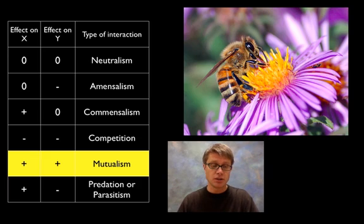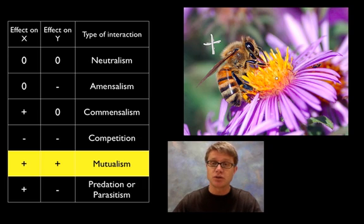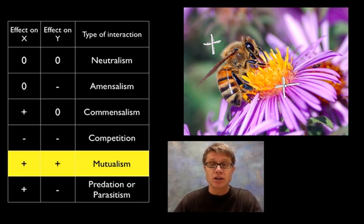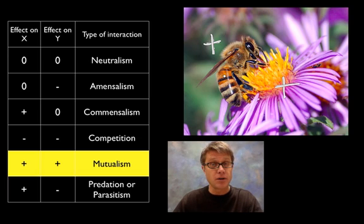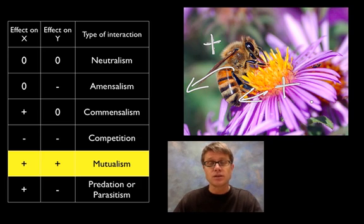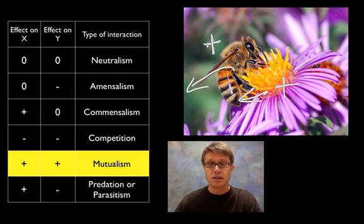Next is mutualism, which is when both organisms benefit. Pollination is an example of a mutualistic relationship between insects and flowers. As an insect lands on a flower and eats the nectar — getting food — it also gets dusted with pollen and carries it to a different plant. So the plant gets dispersion of its pollen or sperm to another plant, and the bee gets a constant food supply. This is a mutualistic relationship: they both benefit.